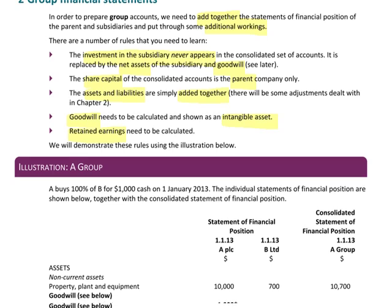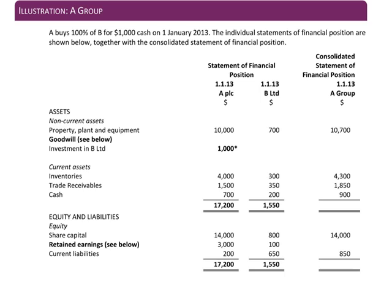Let's start with a fairly simple illustration showing how we prepare group accounts for two companies, A and B. In this situation, A is buying 100% of the shares in B for $1,000 in cash on the 1st of January 2013. We have the individual company statements of financial position, and we're adding these together to get the consolidated statement of financial position on the date of acquisition — the very first day that B is owned by A.